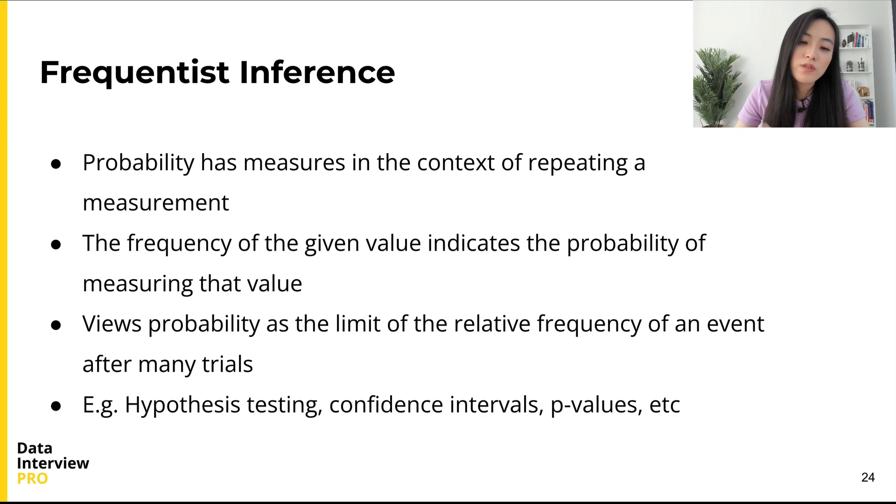By comparison, with frequentist approach, probability has measures in the context of repeating a measurement. As we measure something a large number of times, the frequency of a given value indicates the probability of measuring that value. It views probability as the limit of the relative frequency of an event after many trials.